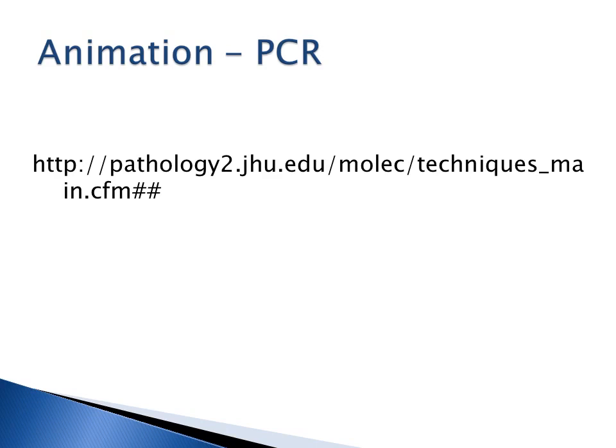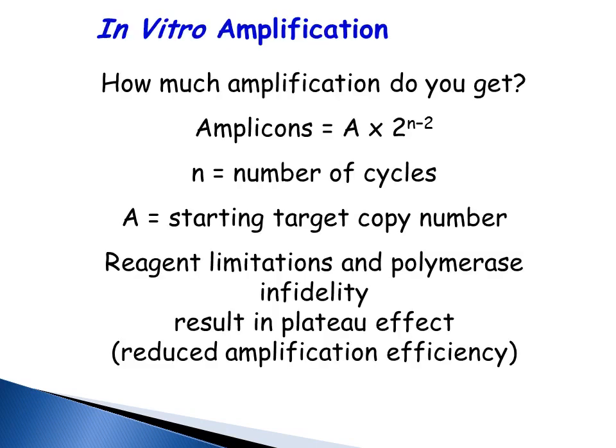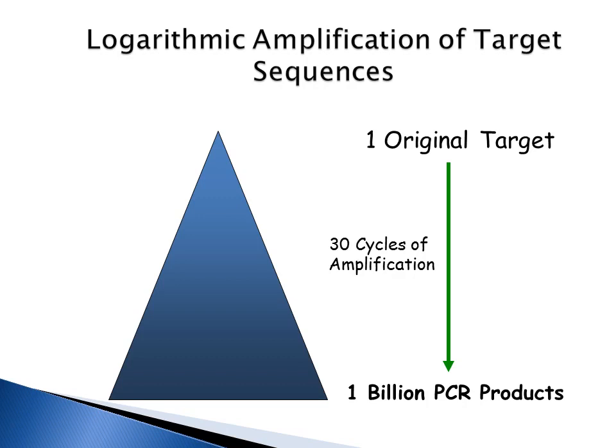Your in vitro amplification yield is: amplicons × 2^(N−2), where N is the number of cycles and A is the starting target copy number. Limitations in reagents and infidelity of the polymerase affect how much amplification you get. PCR is a logarithmic amplification of your target sequence — with one target sequence and 30 cycles under optimal conditions, you will end up with 1 billion PCR products.